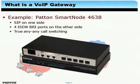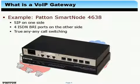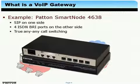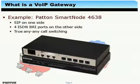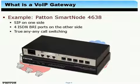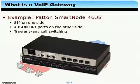Before we continue this VoIP nugget, I'd like to introduce to you the VoIP gateway we are going to use for the rest of the nugget. This is the Patent SmartNode 4638. It's a gateway that fits into the scenario that we've been drawing on the previous slide. It has two Ethernet ports for SIP connectivity to the 3CX phone system, and it has four ISDN lines to connect to German Telecom, for example. It converts eight simultaneous voice or fax calls from SIP to ISDN, and being a SmartNode, it supports true any-to-any call switching.